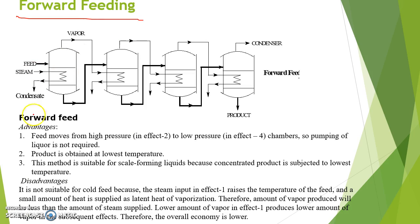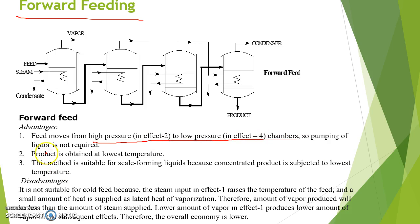In forward feeding, the feed enters the first effect evaporator and the product is collected from the last effect evaporator. The advantages of forward feeding are: feed moves from high pressure to low pressure chambers so pumping of liquor is not required, and the product is obtained at the lowest temperature. This method is suitable for scale-forming liquids because the concentrated product is subjected to the lowest temperature.